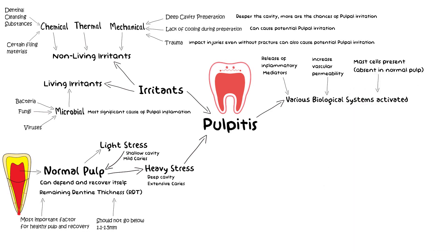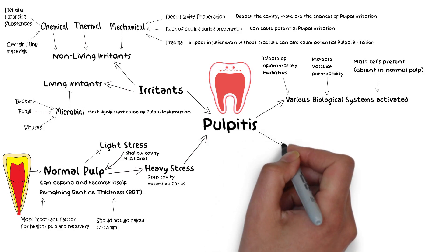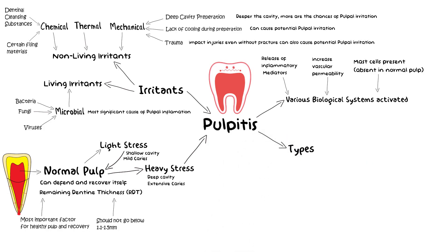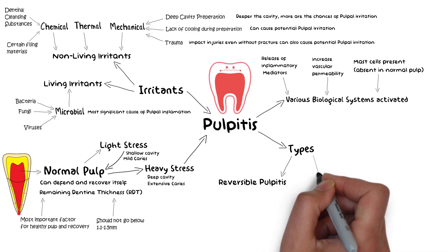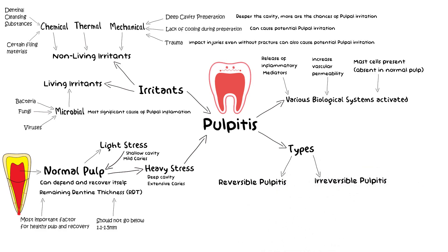There are many different steps of an inflammatory response that you have already studied in pathology, but for a dental student studying endodontics, those are less important. Based on clinical signs and symptoms, there are two main types of pulpitis: reversible pulpitis and irreversible pulpitis. Reversible pulpitis is more of an acute condition, while irreversible pulpitis is more of a chronic condition and is often a sequel to reversible pulpitis.